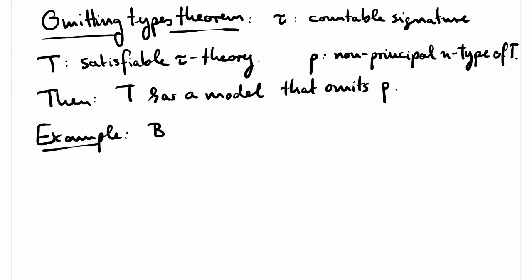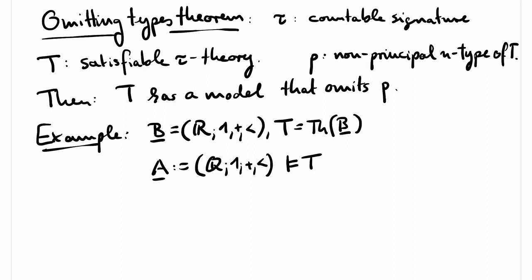For example, suppose that B is again our structure whose domain is the real numbers with 1, plus, and the order. And suppose that T is the theory of B, which is complete, of course. Then the substructure of B with domain Q is also a model of T. And the type of irrational numbers, such as square root of 2, in B is omitted in A.